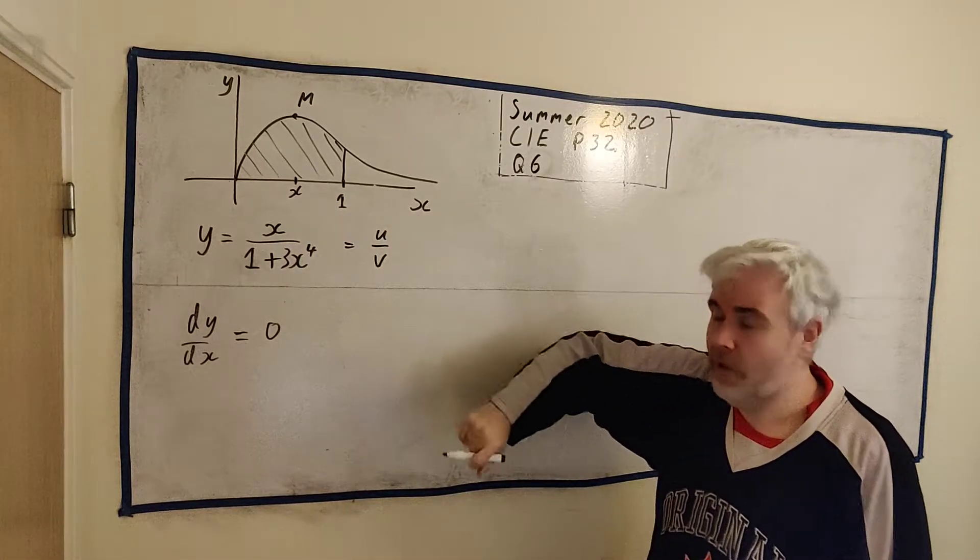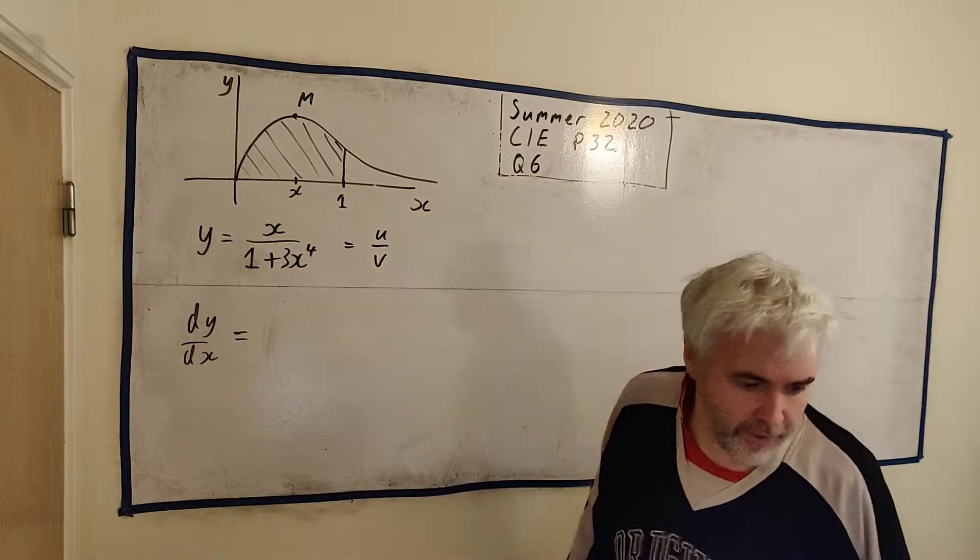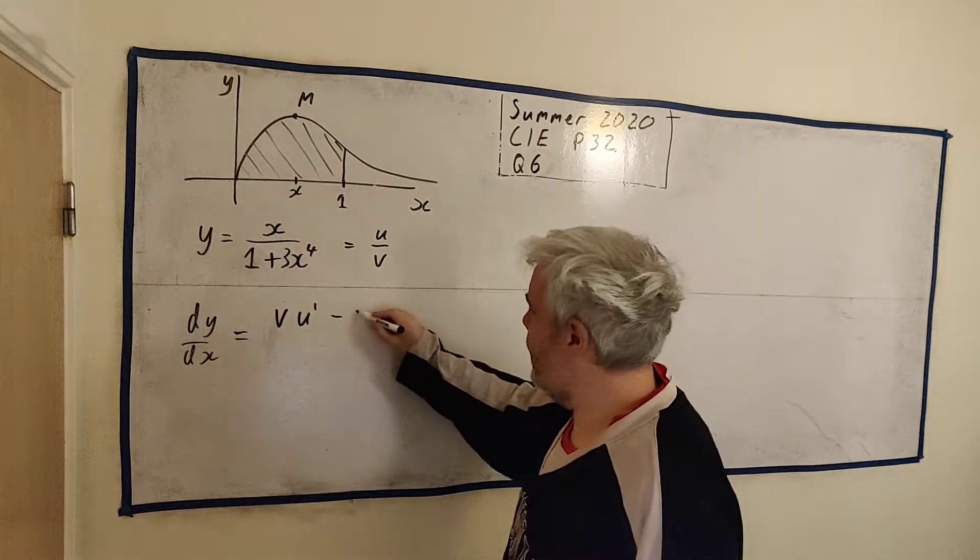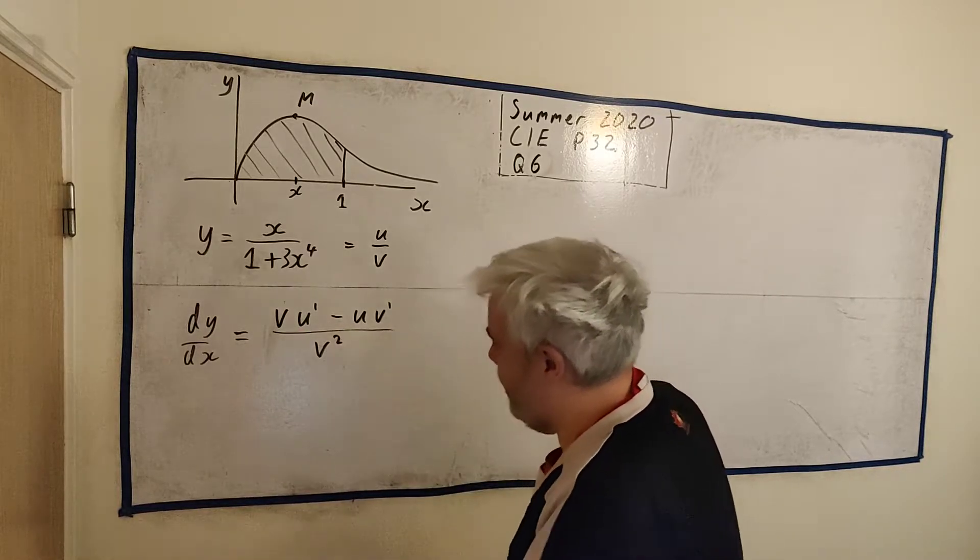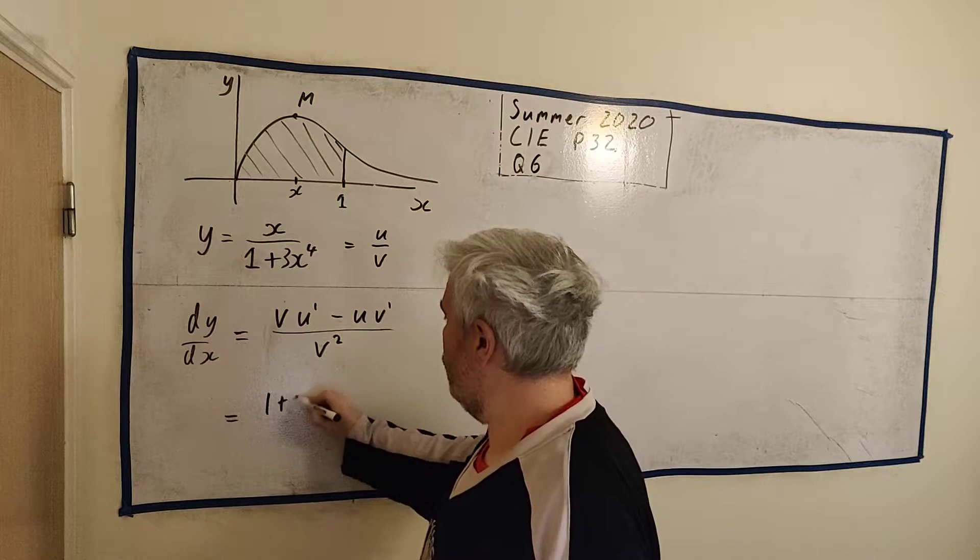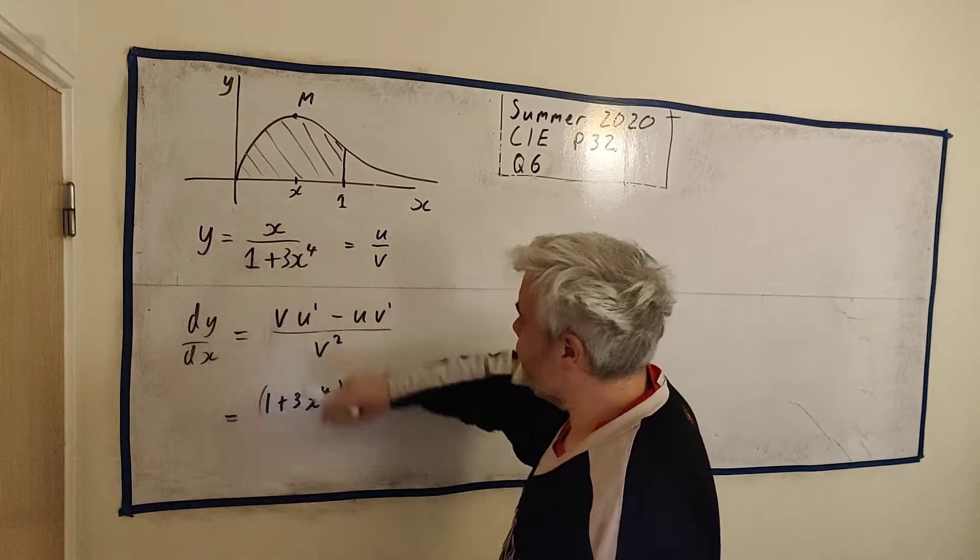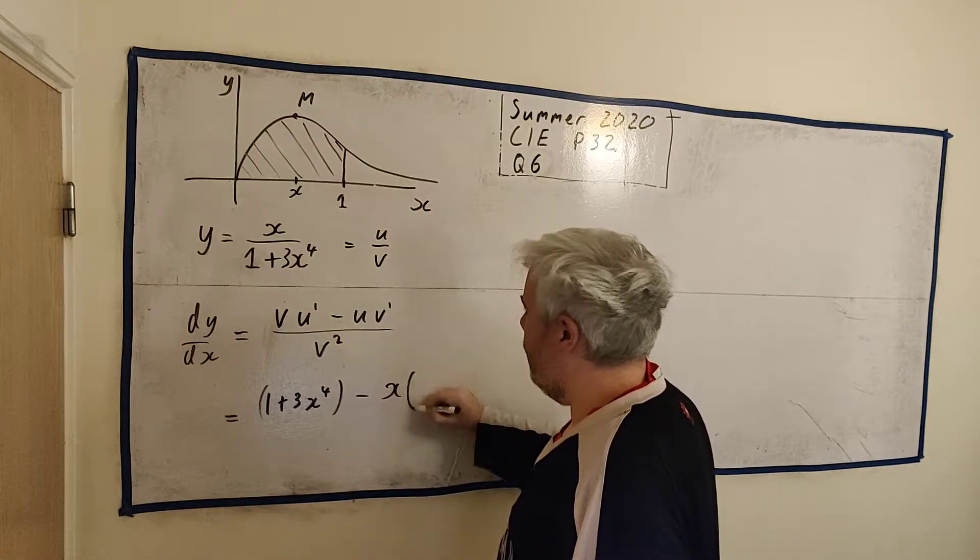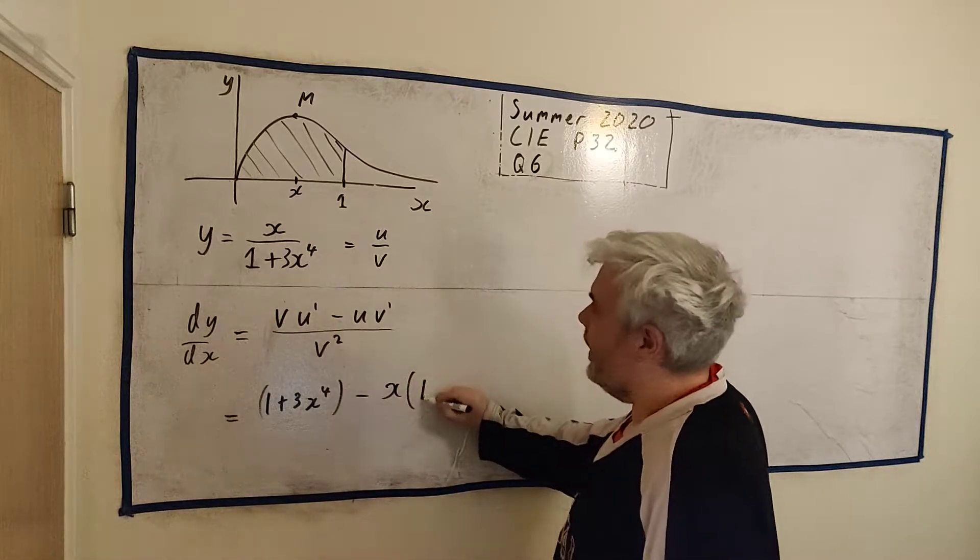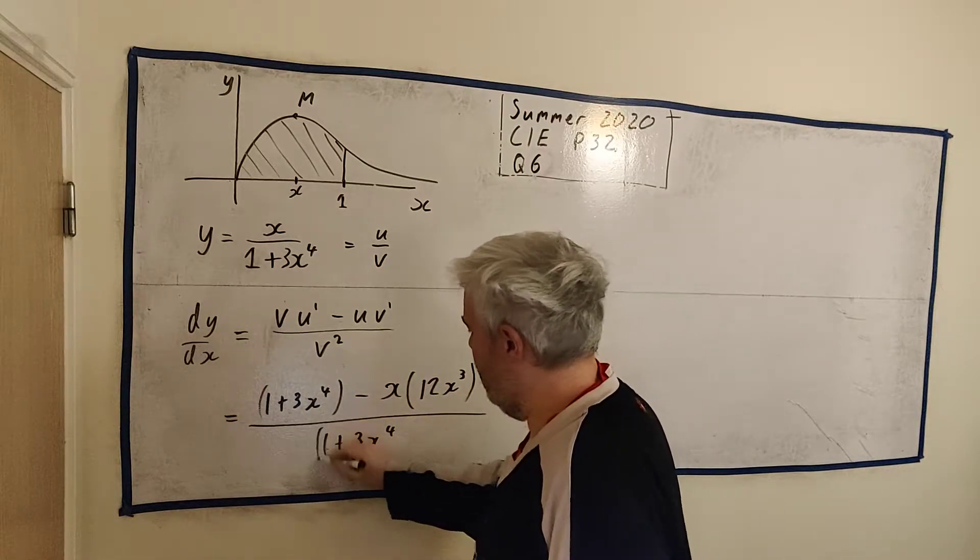So we take the top row, put it as u, bottom row as v. And then we use the formula: v multiplied by the derivative of u, minus u multiplied by the derivative of v, all over v squared. So v is 1 plus 3x to the power of 4, multiplied by the derivative of the top row, which is 1. Minus u, the top row, multiplied by the derivative of the bottom row. The derivative of 1 is 0. The derivative of 3x to the power of 4 is 12x to the power of 3.